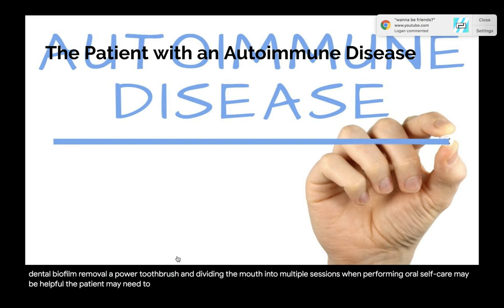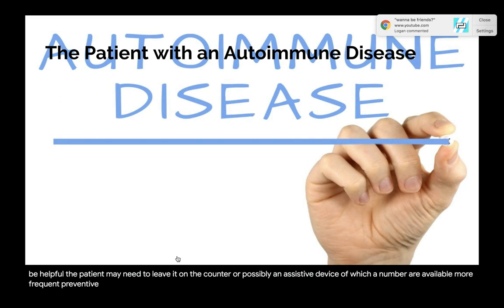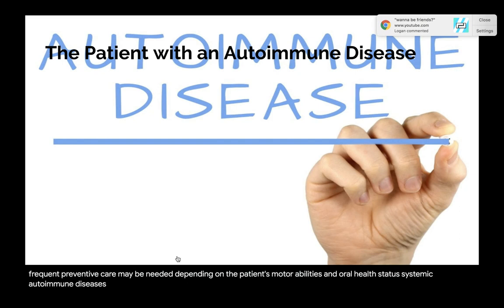The patient with myasthenia gravis may have difficulty performing adequate dental biofilm removal. A power toothbrush and dividing the mouth into multiple sessions for oral self-care may be helpful. The patient may need to support the hand with the toothbrush by leaning on the counter or using an assistive device. More frequent preventive care may be needed depending on the patient's motor abilities and oral health status.